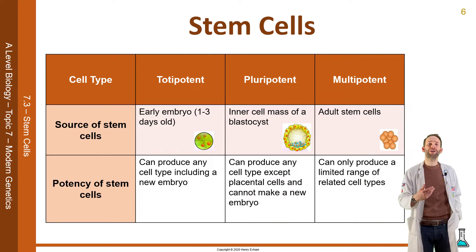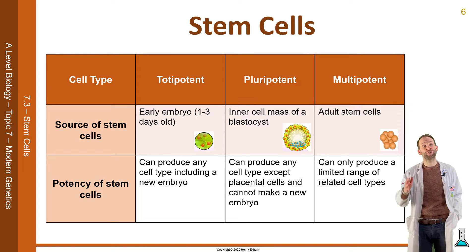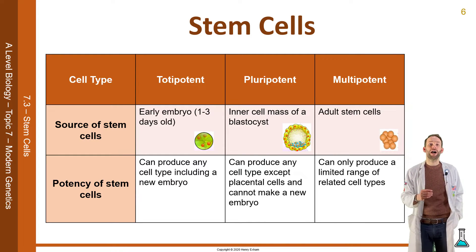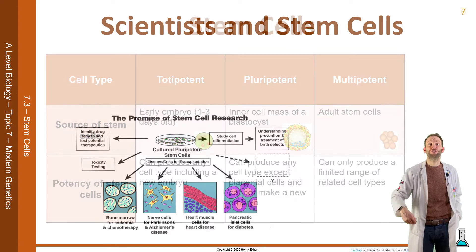This table here is a nice summary of the three different types of stem cell — totipotent, pluripotent, and multipotent — where you get them from and what they can produce.